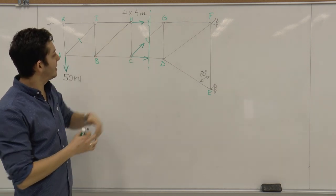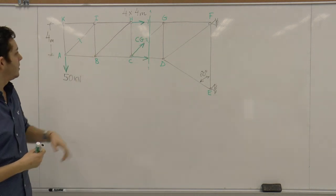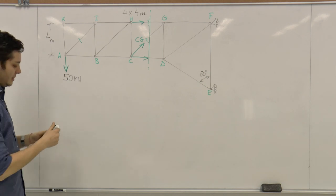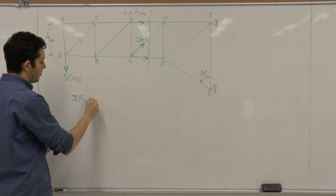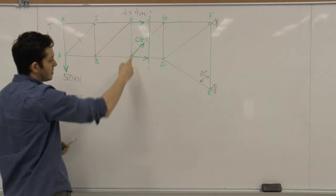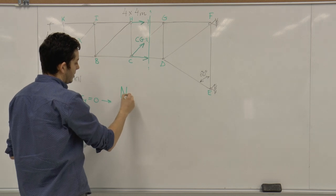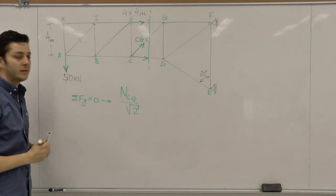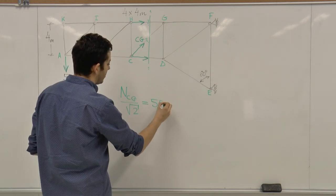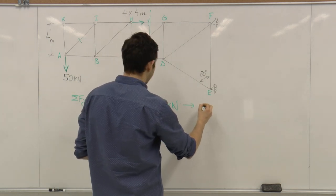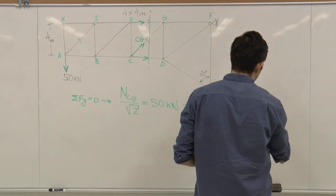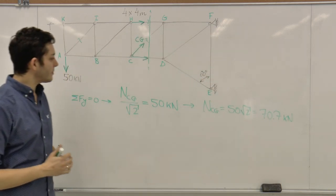The way to find CG is, if we're looking on this structure, we have in Y direction only CG and 50 kilonewton. Sum of the forces in Y will give us CG pointing up. This is 4 meter, this is also 4 meter, so it's 45 degrees. So it's NCG over square root of 2 times sine 45 equals to 50 kilonewton. Therefore, NCG is 50 square root of 2, or 70.7 kilonewton.